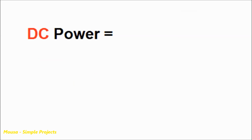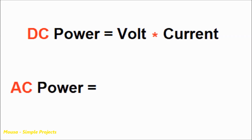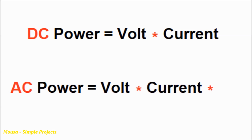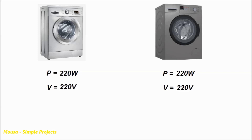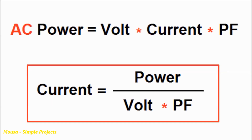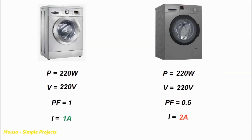The power in DC devices is equal to voltage times current. But the power in AC devices is equal to voltage times current times power factor. Assuming we have two AC appliances with the same power and the same voltage, but the power factor of the second device is higher than the first device. In this case, the first device with lower power factor will draw more current than the second device. So as you can see, the current draw of these two devices is not the same, while the power consumption in both of them is exactly the same.